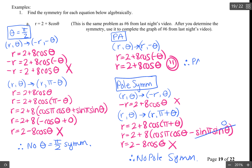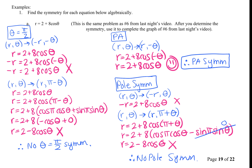Therefore, the only symmetry we have for this equation is polar axis symmetry. This is the end of the first example. I'm going to stop the video here and create a part two just to keep the video under 15 minutes.